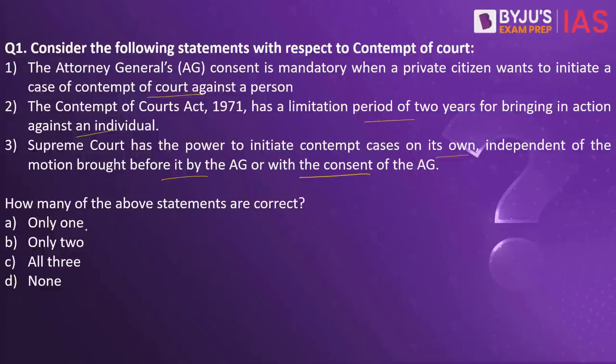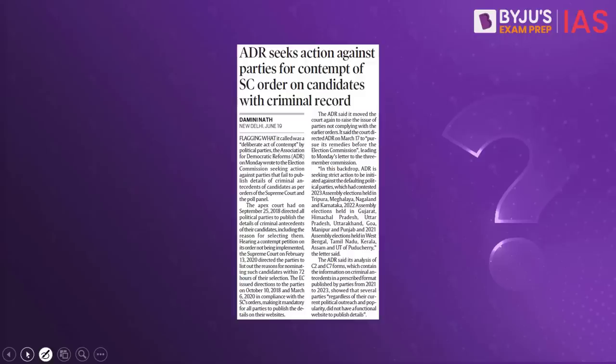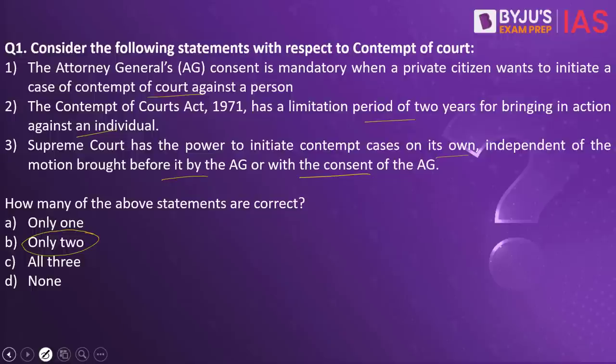The answer to this is only two statements. This practice question is taken because an article on the Indian Express makes a reference to contempt of court. When you look into the first statement — the Attorney General's consent is mandatory when a private citizen wants to initiate a case of contempt of court against a person.